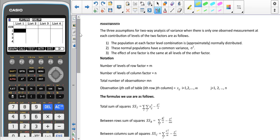We've got three similar assumptions to the one-factor ANOVA. The three assumptions for two-factor analysis of variance when there is only one observed measurement at each combination level of the two factors are: the population at each level of the combination is approximately normally distributed, the normal populations have a common variance, and the effect of one factor is the same at all levels of the other factors.